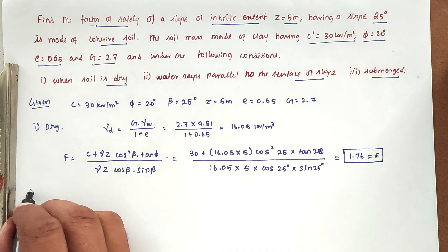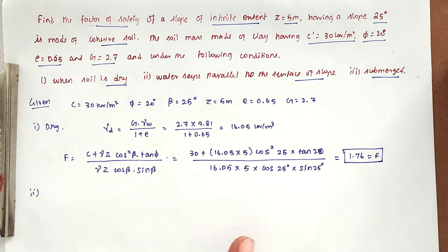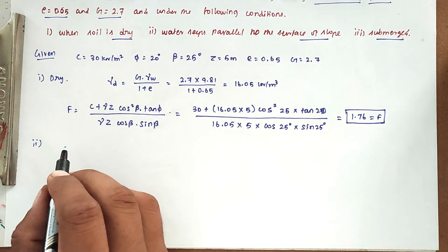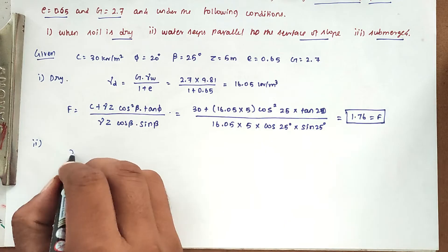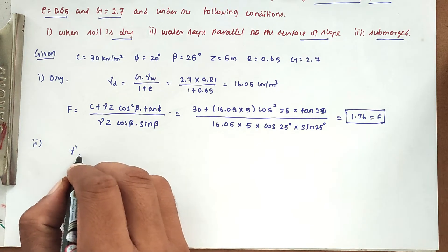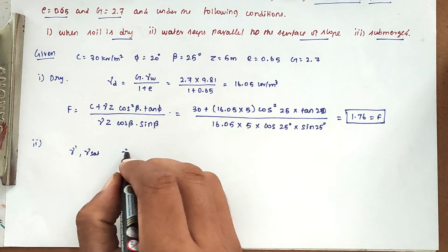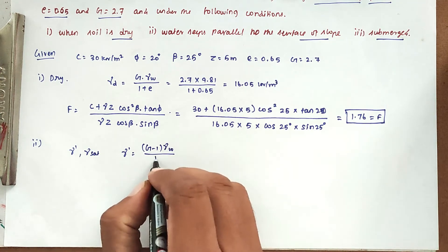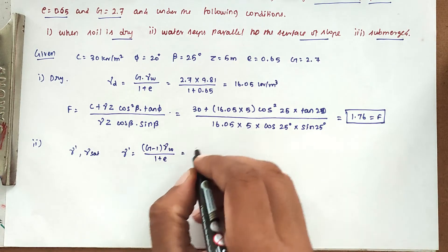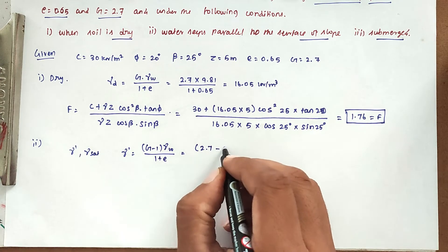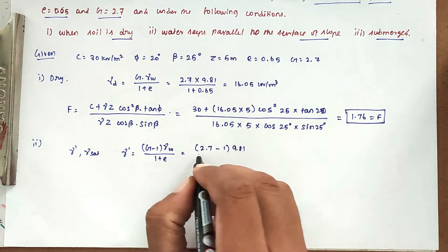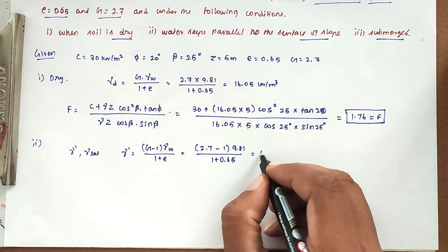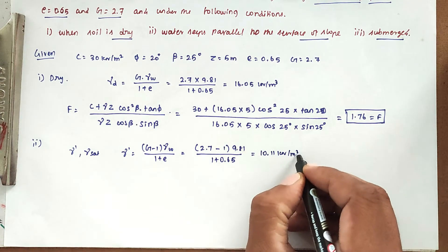Next, when seepage pressure is acting parallel to the slope, we use gamma dash (submerged unit weight) and gamma saturation. Gamma dash equals (G minus 1) times gamma_W divided by (1 plus E), which gives: (2.7 minus 1) times 9.81 divided by (1 plus 0.65). Solving this, gamma dash equals 10.11 kilo Newton per meter cube.